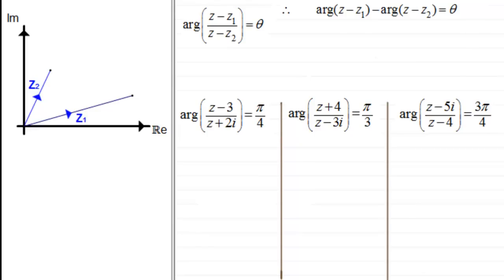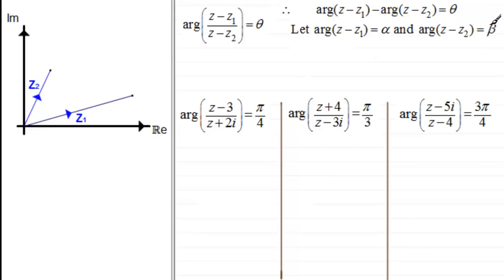If I let the arg of z minus z1 equal alpha, and the arg of z minus z2 equal beta, then what we've got is that alpha minus beta must equal theta.